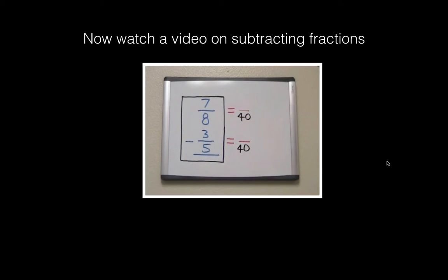So once we have our LCD, we take the top fraction, take our 40, divide it by 8 to get 5. Take our 5, multiply it by 7 to get 35. We go down to our second fraction, take 40, divide it by 5 to get 8. Take that 8, multiply it by 3 to get 24. Now all we do is subtract our numerators, so we're subtracting 24 from 35 to get 11. Then we have a final answer of 11/40.